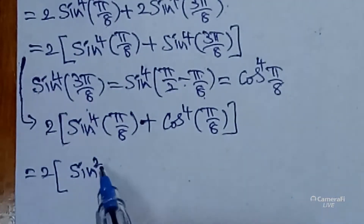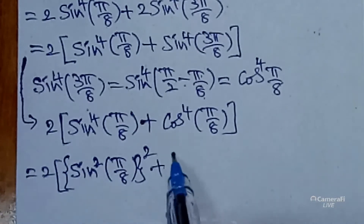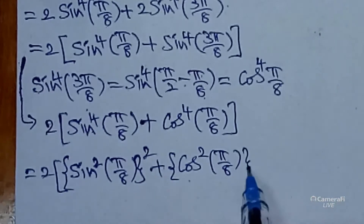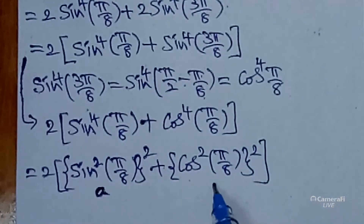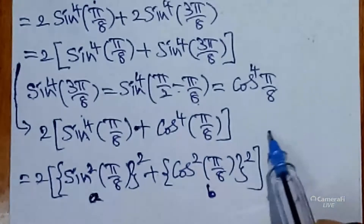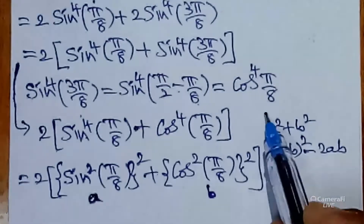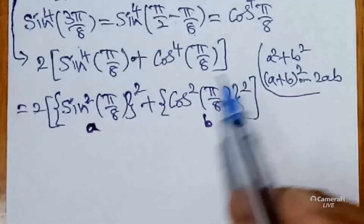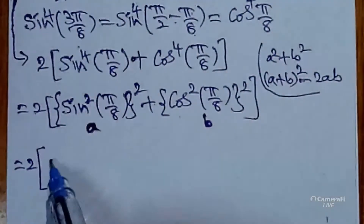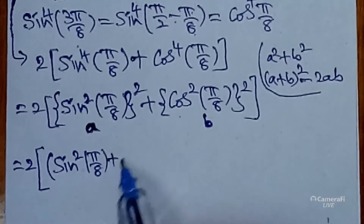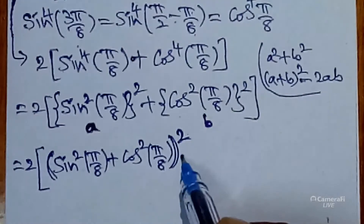Now sin⁴(π/8) + cos⁴(π/8) can be written as [sin²(π/8)]² + [cos²(π/8)]². Let a = sin²(π/8) and b = cos²(π/8). Using the formula a² + b² = (a + b)² − 2ab, we get: 2 × [(sin²(π/8) + cos²(π/8))² − 2·sin²(π/8)·cos²(π/8)].